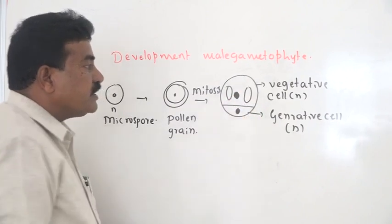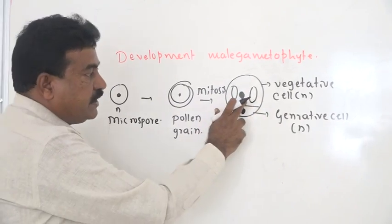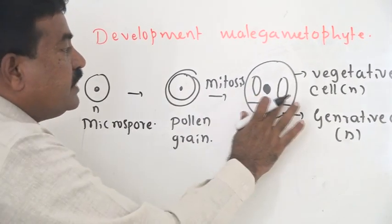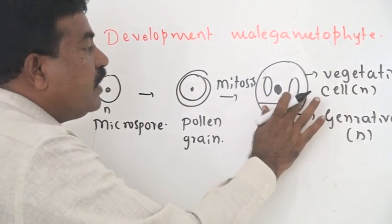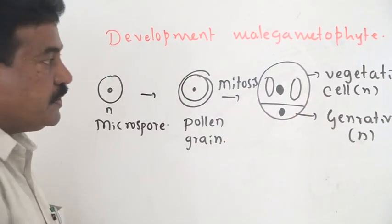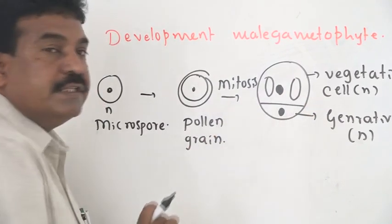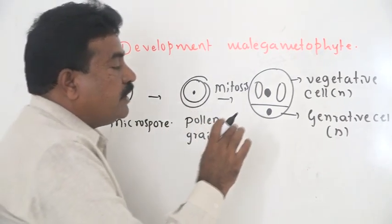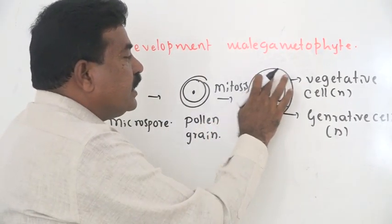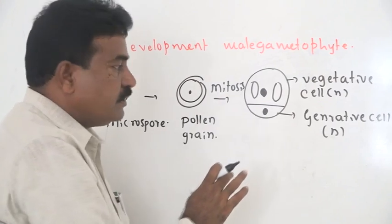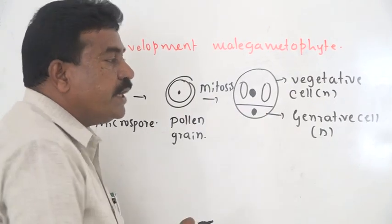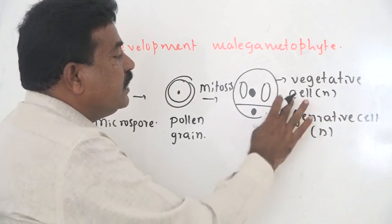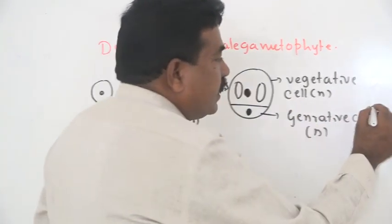The cytoplasm of the vegetative cell is in a huge quantity, while that of the generative cell is less. There is also a presence of large vacuoles in the vegetative cell, while in the generative cell there are no vacuoles. Additionally, the vegetative cell contains lots of nutrients, while nutrients are absent in the generative cell. Hence, the vegetative cell nourishes the generative cell.